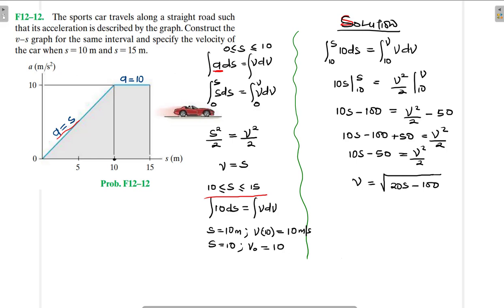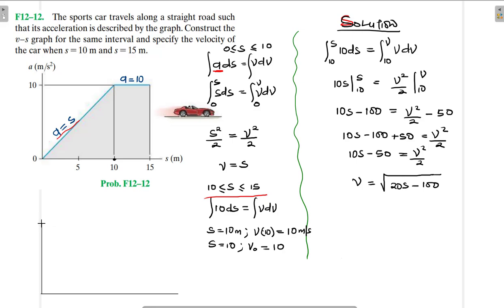With this information we are now ready to plot. We set up our axes: velocity in meters per second on the vertical axis, and position in meters on the horizontal axis. We begin the work — velocity is a linear function in the first interval, so it will look like a straight line.